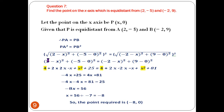P(x, 0) is equidistant from point A(2, -5) and point B(-2, 9). Therefore, PA is equal to PB, meaning PA² is equal to PB².